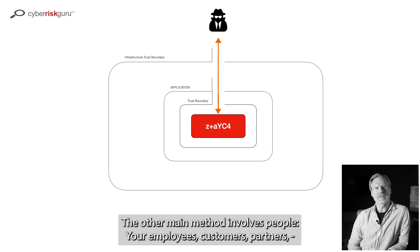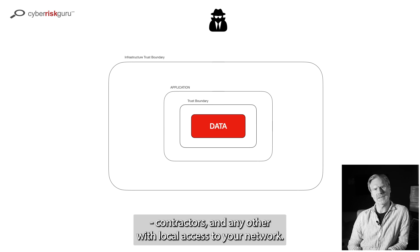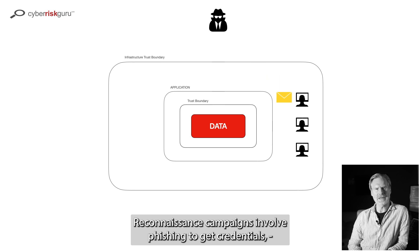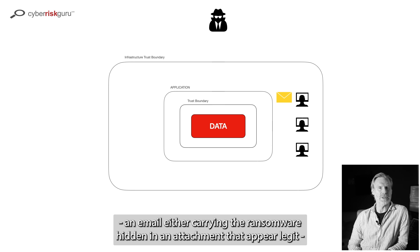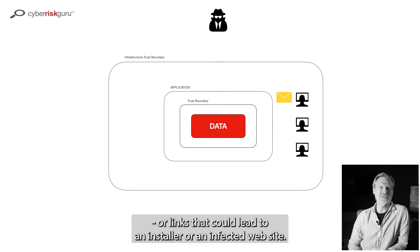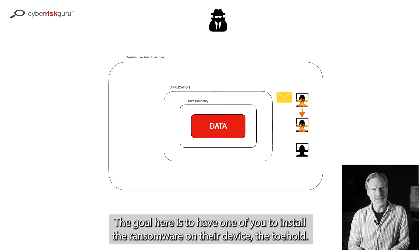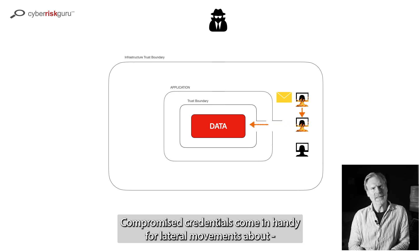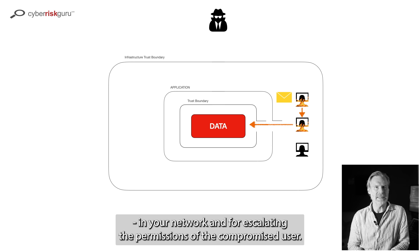The other main method involves people — your employees, customers, partners, contractors, and anyone else with local access to the network. Reconnaissance campaigns involve phishing to get credentials, or an email carrying the ransomware hidden in an attachment that appears legit, or links leading to an installer or an infected website. The goal is to have someone install the ransomware on their device — the toehold. Compromised credentials then enable lateral movement within your network and escalation of permissions on the compromised user.